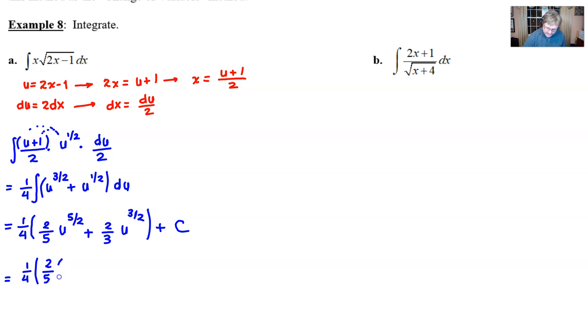So you're going to replace the u's with our 2x minus 1. So when you do that, you end up with one fourth quantity two fifths times 2x minus 1 to the five halves, whoops can't write my two for some reason. And then we're going to add two thirds, and then we're going to replace u with 2x minus 1 yet again. And now we raise him to the three halves, and then we close off our plus c. And that takes care of example 8a without any complex simplification.